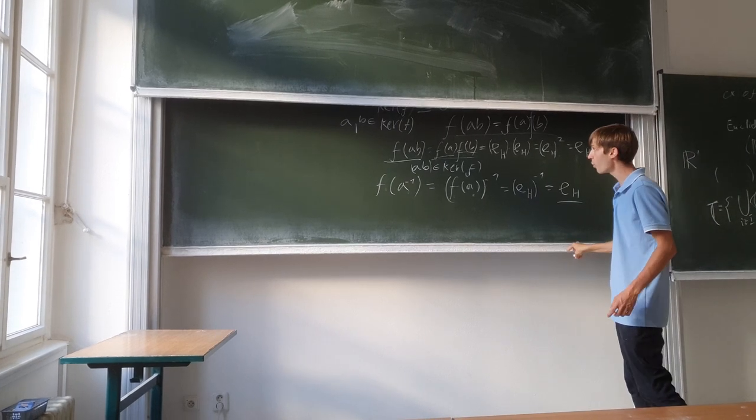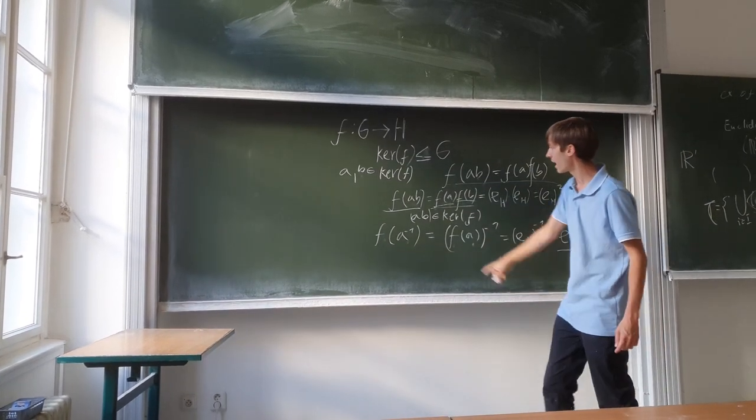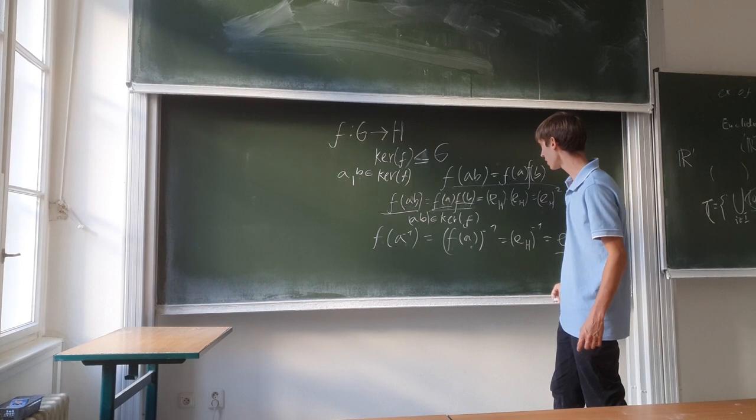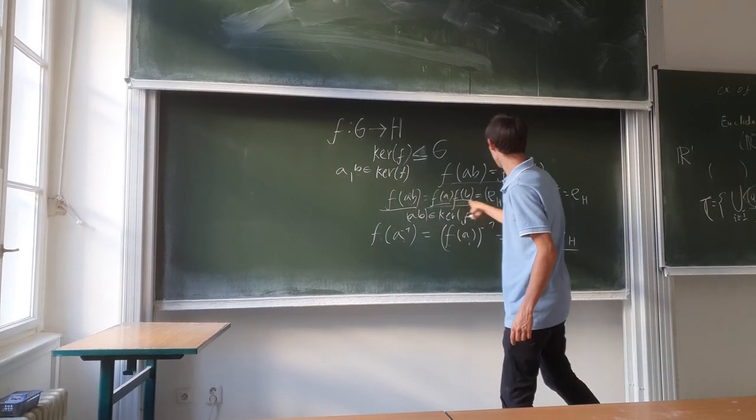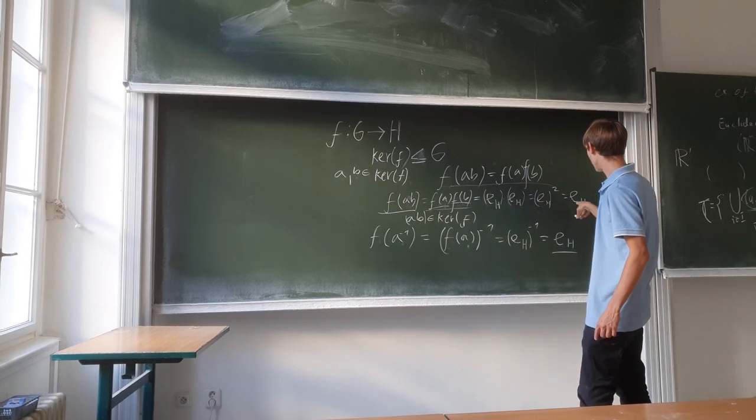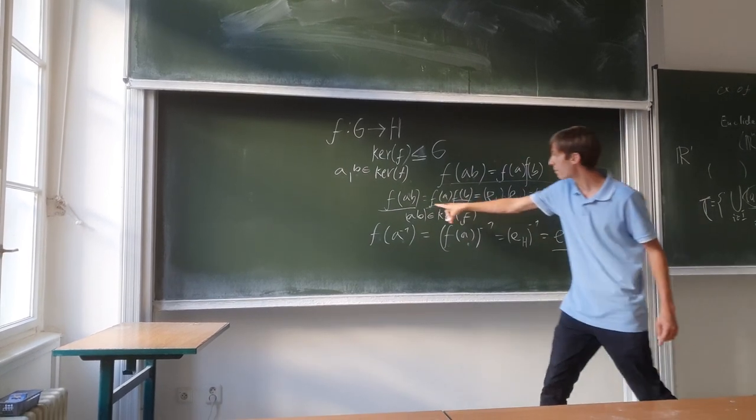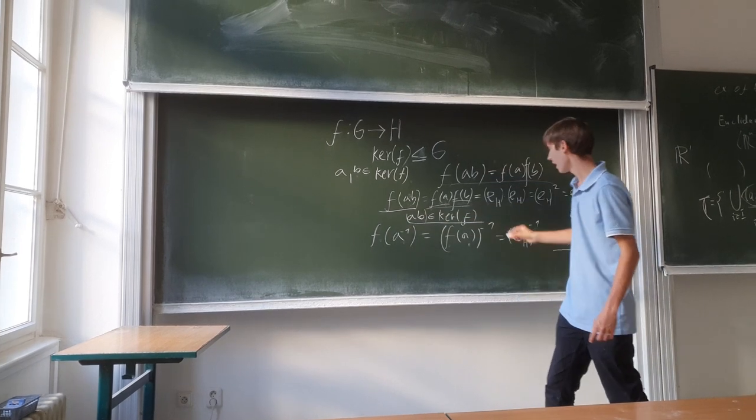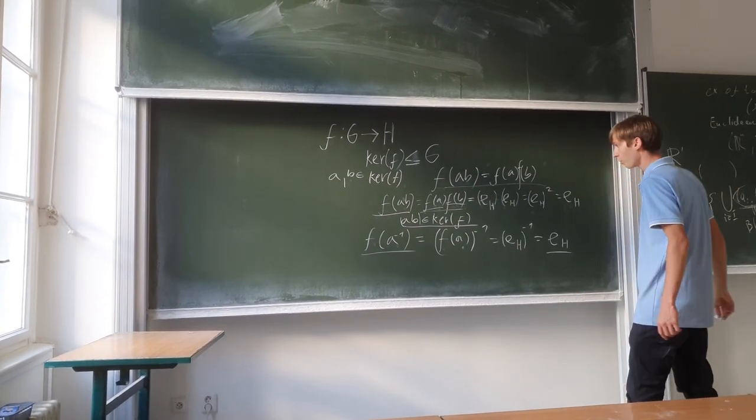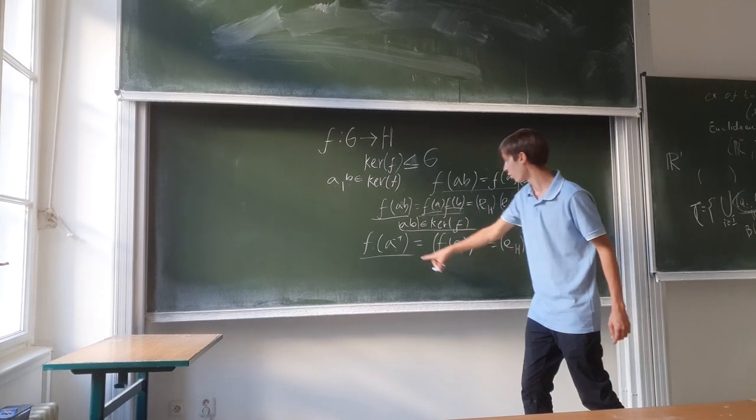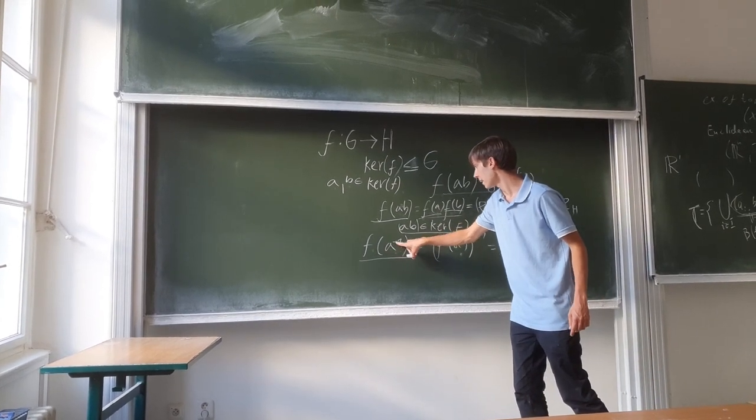Through these two facts, through knowing that the operation between a and b here is G's operation, we can break it out and say that if we have a, b in kernel f, ab will again end up as the identity, therefore ab must be in kernel f.